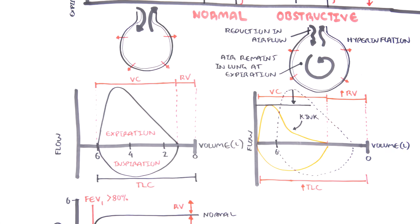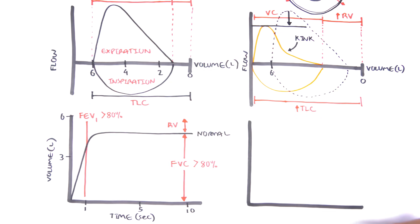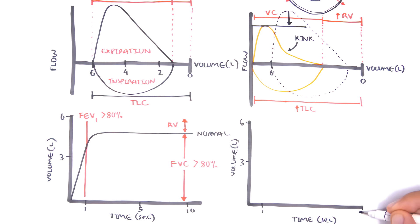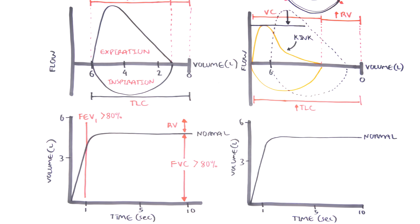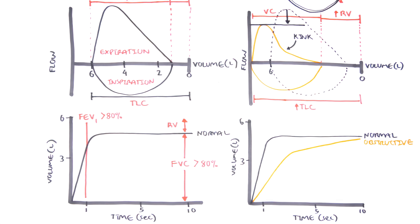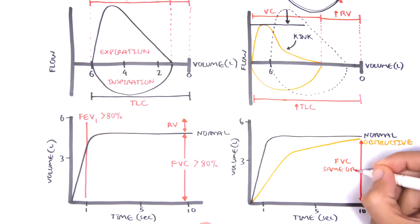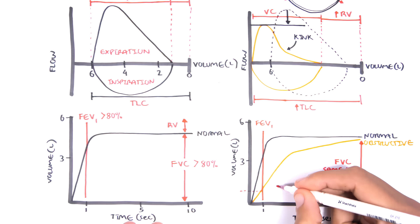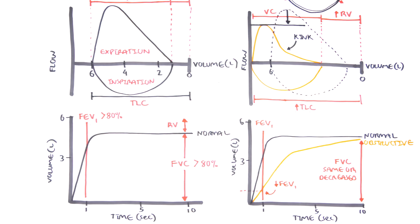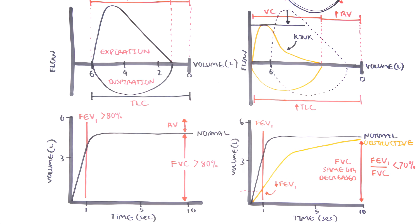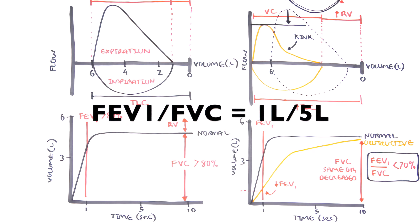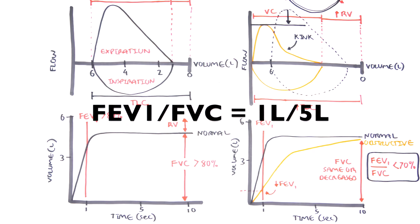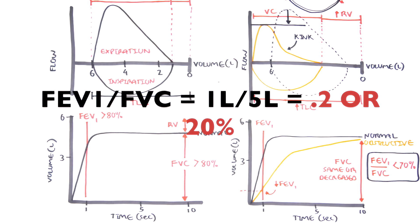Let's see what the first second of a forced expiration looks like using the graph with time on the x-axis and volume on the y-axis, comparing this to normal forced vital capacity. In obstructive lung disease, the forced vital capacity is the same or slightly decreased, but the forced expiratory volume in the first second has dropped significantly. Obstructive lung disease can be diagnosed when the FEV1 to FVC ratio is less than 0.7 or 70%. In this example, FEV1 is about 1 liter and FVC is about 5 liters, so 1 divided by 5 is less than 70%, confirming obstructive lung disease.